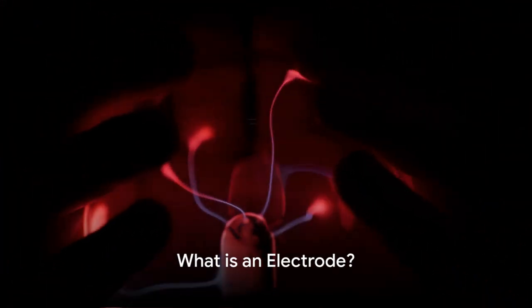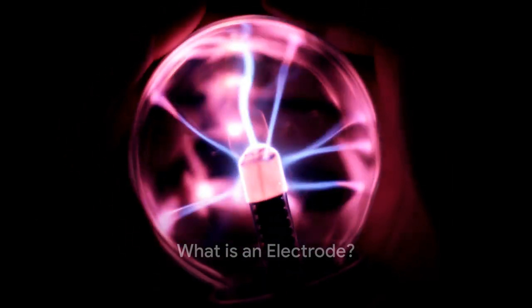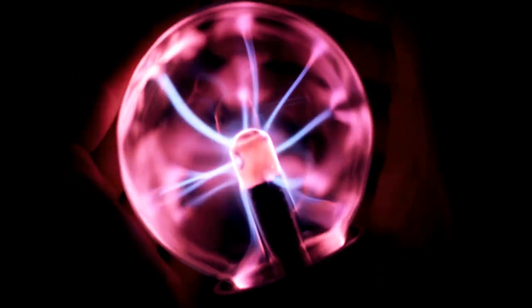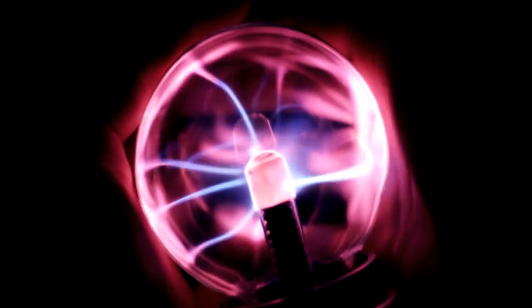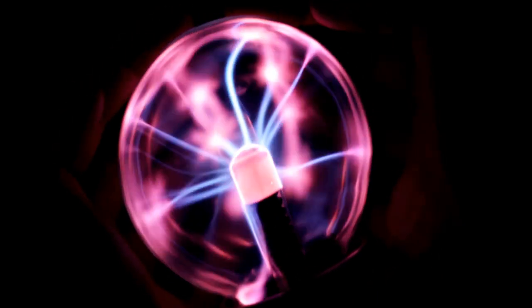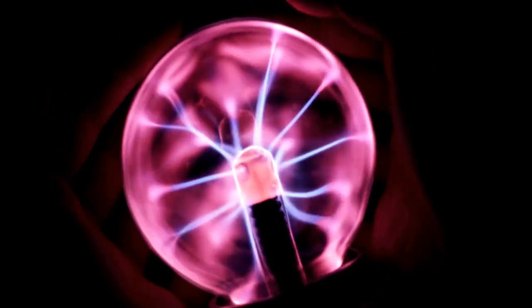First, let's demystify what an electrode is. An electrode is a conductor through which electric current enters or leaves a non-metallic medium like an electrolytic cell, an electric arc furnace, or a gas discharge tube.